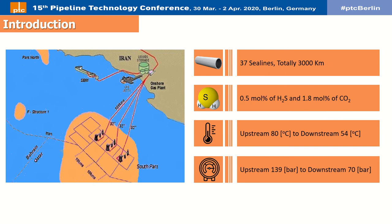Thus, pipeline operators are dealing with the combined inhibitor injection effect. Specifically, in the case of lengthy pipelines such as South Pars, the temperature gradient between input and output flow causes massive formation of both hydrate and scales on the metal surface. In this article, 20 years of pipeline operation experience at South Pars using different inhibition methods are discussed in detail.